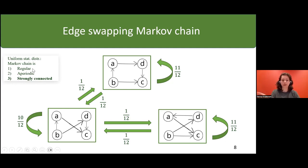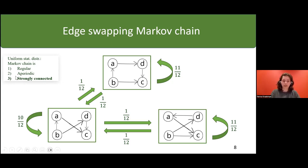There are three conditions for a uniform stationary distribution. First, the chain needs to be regular — the sum of incoming probabilities equals the sum of outgoing probabilities for all states, which is always the case for this method. Second, the chain needs to be aperiodic — the greatest common divisor of cycle lengths must be one. This is intrinsically satisfied because of self-loops, which have length one.